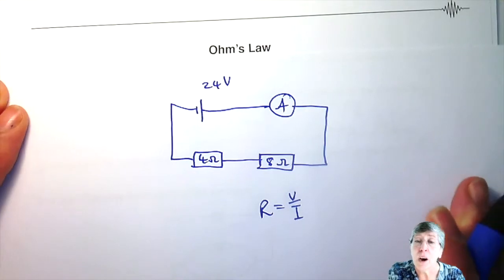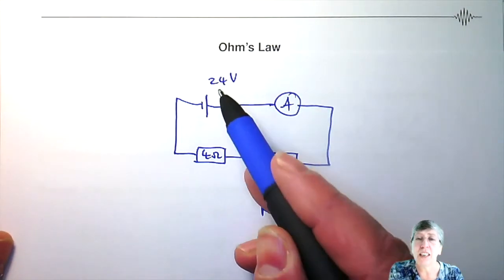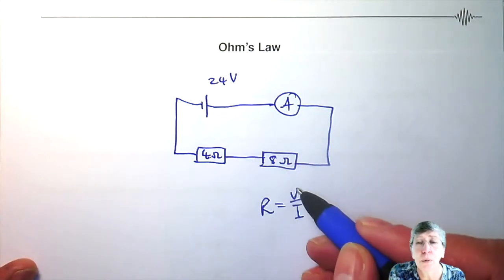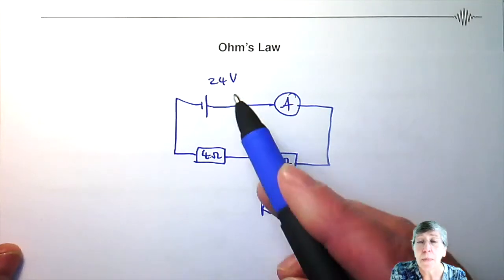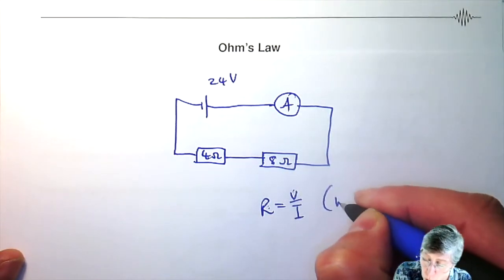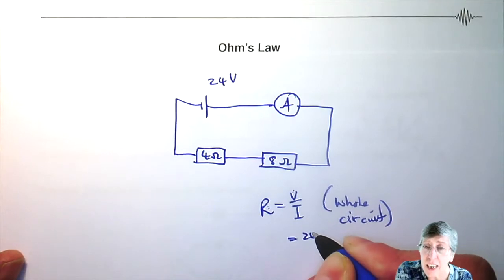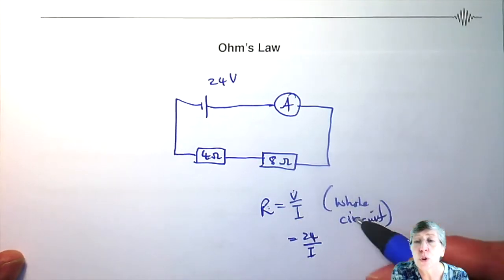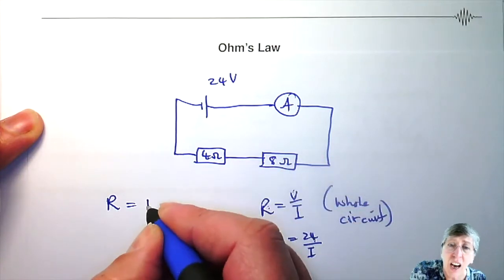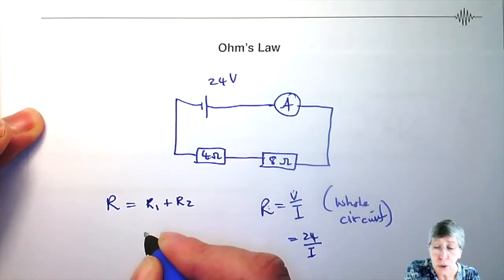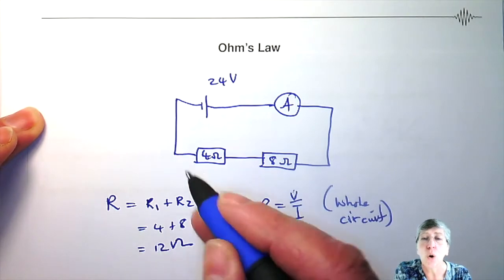I'm looking for the current. Now which R and which V? If you have a 24-volt cell, a 4-ohm resistor and an 8-ohm resistor in series, that 24 volts is for the whole circuit — it is not true for the 4-ohm alone, and not true for the 8-ohm alone. So don't mix them up. The 24 is for the whole circuit, so we need R for the whole circuit. Since they are in series, the total resistance is R1 plus R2, which is 4 plus 8, giving 12 ohms for the whole circuit.